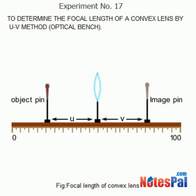The object distance u, image distance v, and focal length of the lens f are related by the formula: 1/f = 1/u + 1/v.